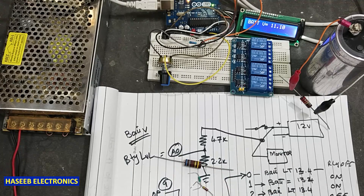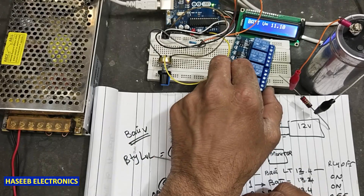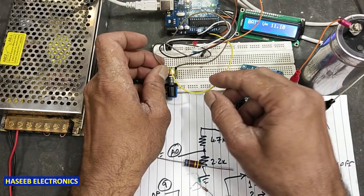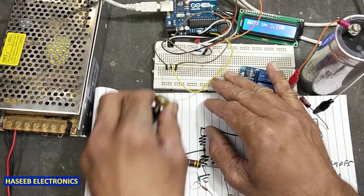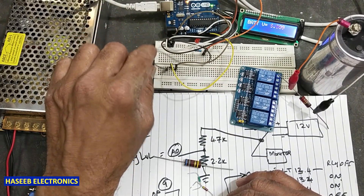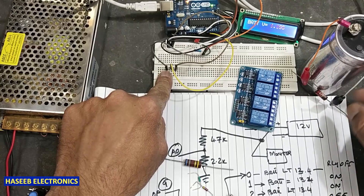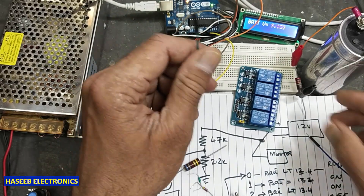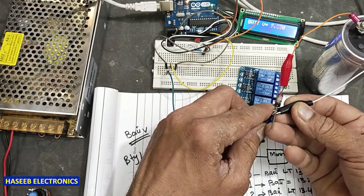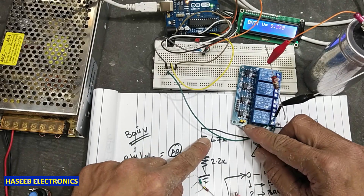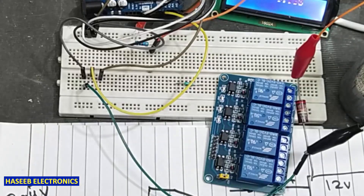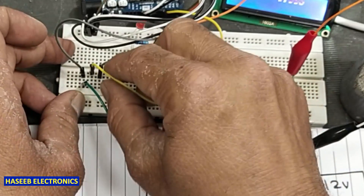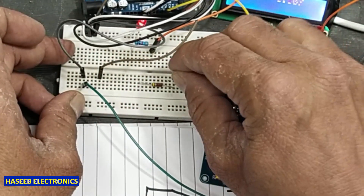I am not using a real battery because if you connect a battery it will take too much time until it becomes charged. First of all we will make connections. I will remove this potentiometer. We have this ground pin, so we will connect this ground pin to the battery ground. In my last video I told that we will use a 4.7k resistor and a 2.2k resistor — the common point will go to the analog pin to read the voltage.